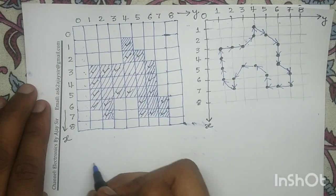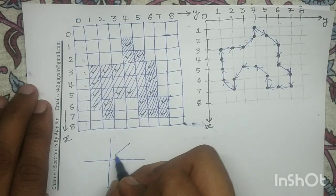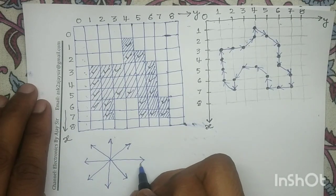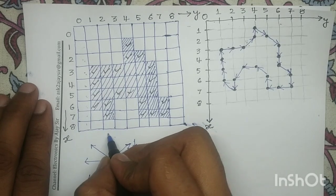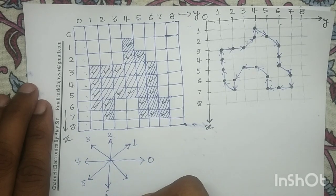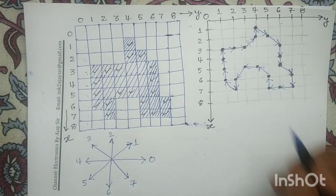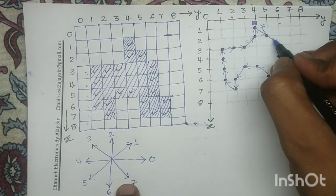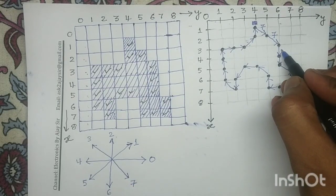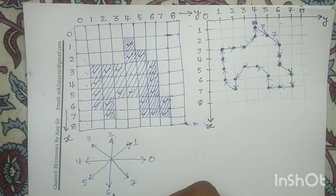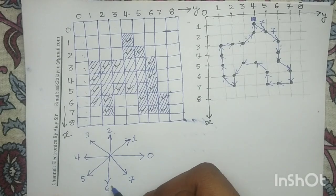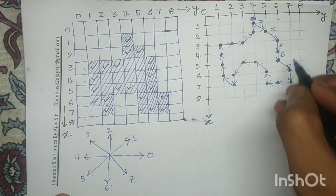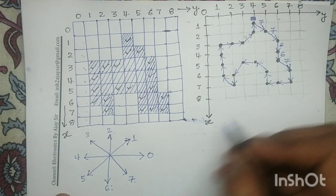Now if you remember the 8-directional chain code, in 8-directional chain code the directional codes are 0, 1, 2, 3, 4, 5, 6, 7. Now this is our starting point. This arrow has the directional code 7, so I will write here 7. Similarly, this arrow also has the directional code 7, so I will write here 7. Now this down arrow has the directional code 6, so I will write here 6. Similarly for this down arrow I will write here 6. This arrow has directional code 7. Again this down arrow has directional code 6, so I will write here 6.